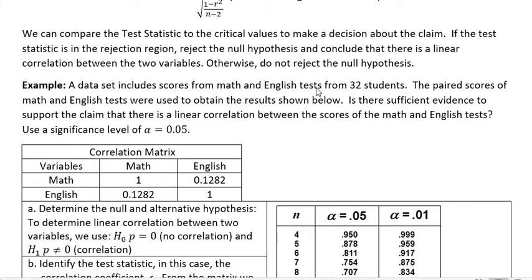Okay, here's an example. A data set includes scores for math and English tests from 32 students. The paired scores of math and English tests were used to obtain the results shown below. Is there sufficient evidence to support the claim that there is a linear correlation between the scores of math and English tests? Use a significance level of 0.05.